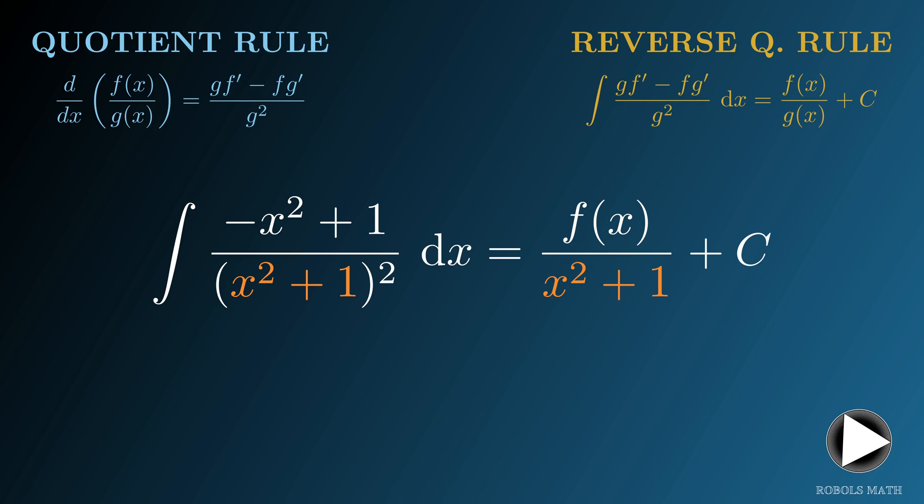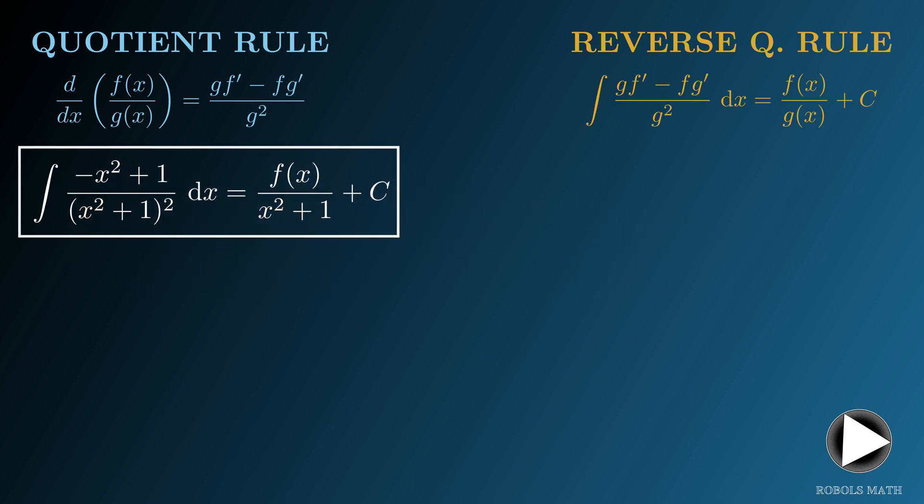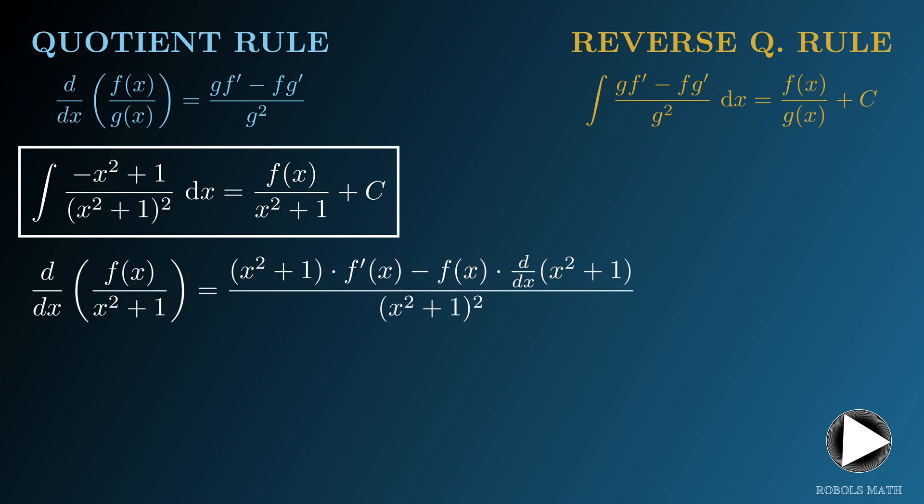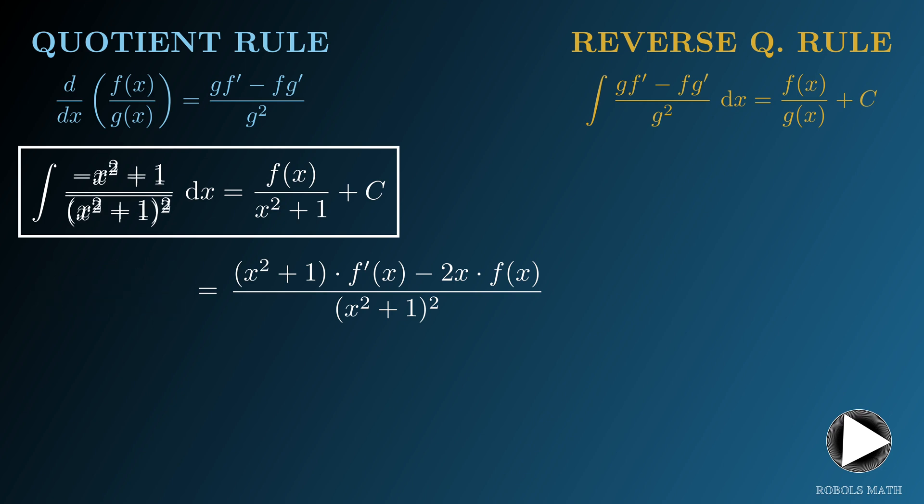Thus, the antiderivative we're looking for actually takes the form f of x over x squared plus 1. Using this assumption, we apply the quotient rule to find its derivative. We evaluate the derivative and then simplify the right side. Note that the left side is equivalent to the integrand that we have. By equating the numerators, we get that.